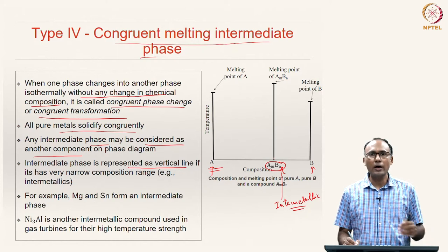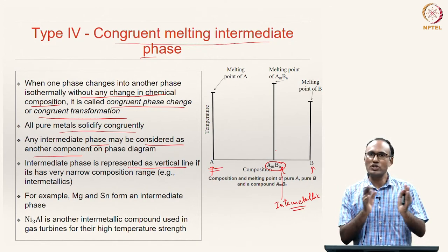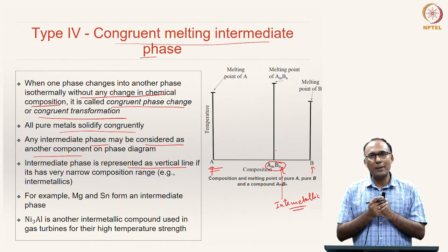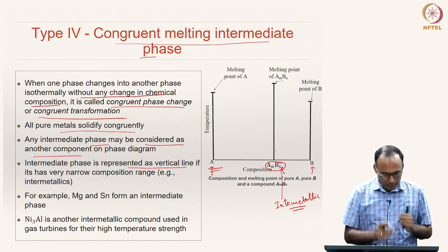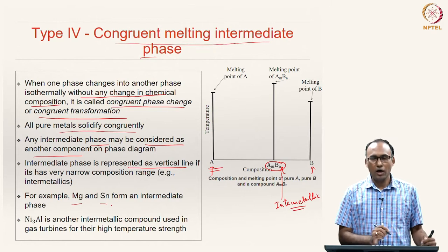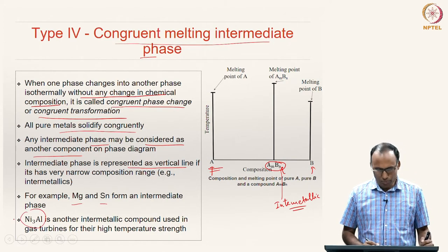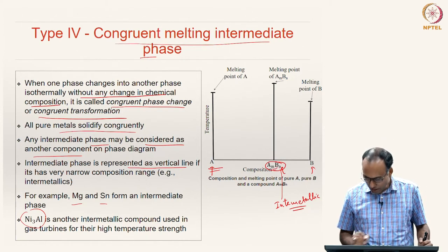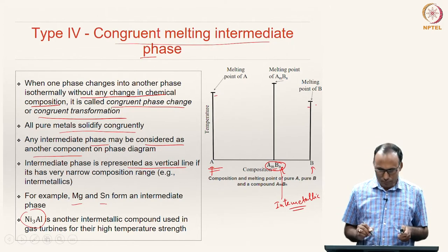When this compound is only possible for a specific whole-number combination of A and B it is a line compound, but sometimes this can happen over a range. If solidification happens at constant temperature and the composition remains the same in that range, it is a single phase going from one single phase region to another. For example, magnesium and tin in a phase diagram form intermediate phases, and Ni₃Al (nickel aluminum) is another intermetallic compound used in gas turbines because of its high-temperature strength. You can see that the compound A_M B_N has a higher melting point than either A or B.